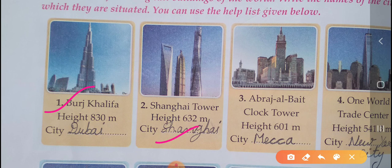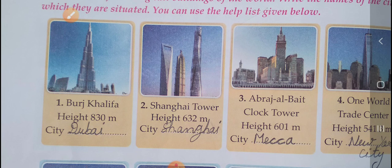Three, Abraj Al-Bait Clock Tower, height 601 meters, city is Mecca. Fourth is One World Trade Center, height 541.3 meters, city is New York City.